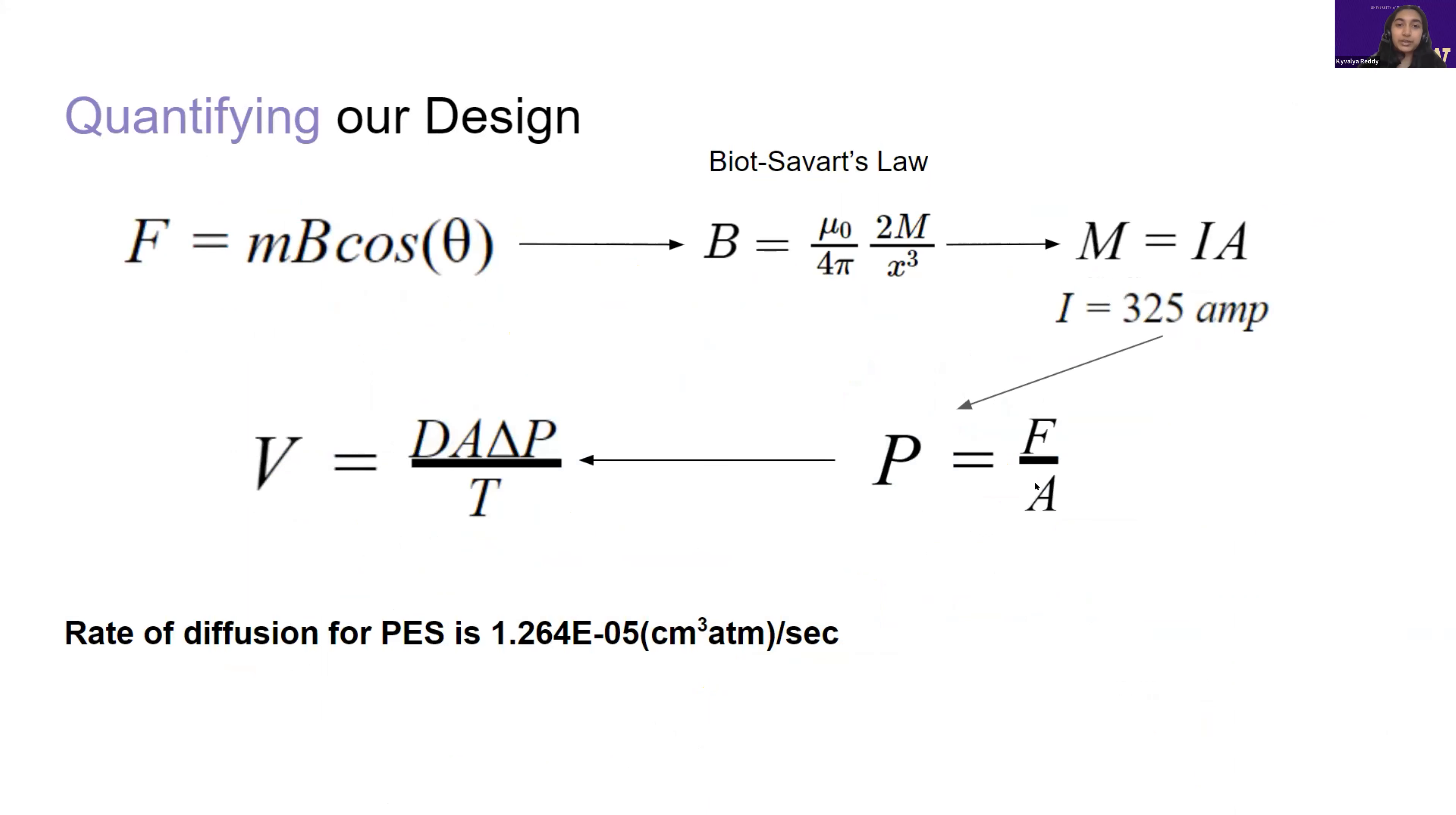We also calculated the rate of diffusion for the oxygen using the force created by the magnet. Through these formulas, we found that the rate was 1.264 times 10 to the negative fifth centimeters cubed atmospheres per second, which we recognize is a very low rate of diffusion, and we would definitely need a much stronger magnet in order to actually achieve our goal.